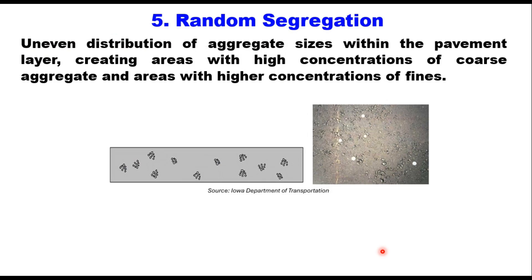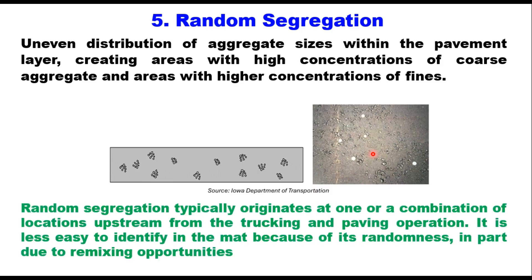The last is random segregation — the uneven distribution of aggregate sizes within the pavement layers, creating areas with high concentration of coarse aggregate and areas with higher concentration of fines. This occurs when different sized aggregates separate during the production, hauling, or placement of the asphalt mixture. Random segregation typically originates at one or a combination of locations upstream from the trucking and paving operation. It is less easy to identify in the mat because of its randomness, in part due to remixing opportunities. Segregated rock pockets are generally caused by improper handling of aggregate in stockpiles or cold feed bins, or improper storage of the HMA at the asphalt plant.